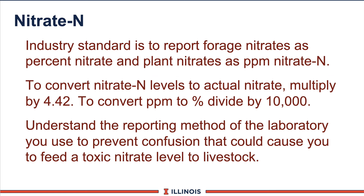Another test you'll see, especially in corn silage, is nitrate and nitrogen. We express the nitrate levels as actual N. Be very careful because you can also have it reported as nitrate — the conversion is you divide the nitrate by 4.4 to get nitrate nitrogen. Be sure you know which type of analysis is being performed on your forages.